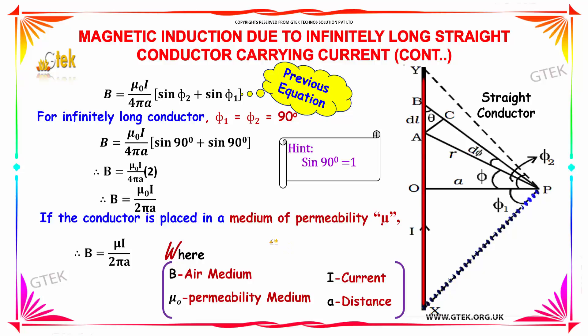For infinitely long conductor, the angles psi1 and psi2 are 90 degrees. Sin 90 degree plus sin 90 degree equals 2. Tallying this 2 and 4, you got mu0 into I by 2pi a.